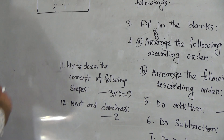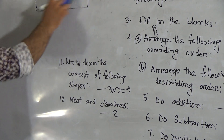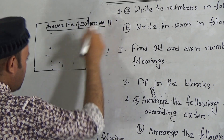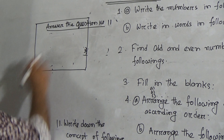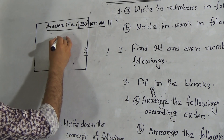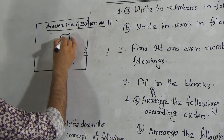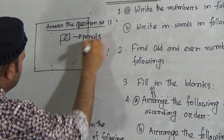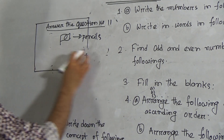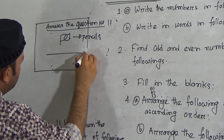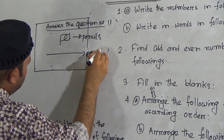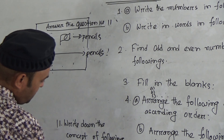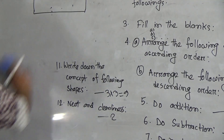Then go to question number eleven: write down the concept of the following shapes. We have already learned this. Write your answer to question number eleven. You will draw a concept here — for example, a concept of a flag. Draw the flag with a pencil and write the definition also with pencil. You can get 3 into 3, which means 9 marks here.